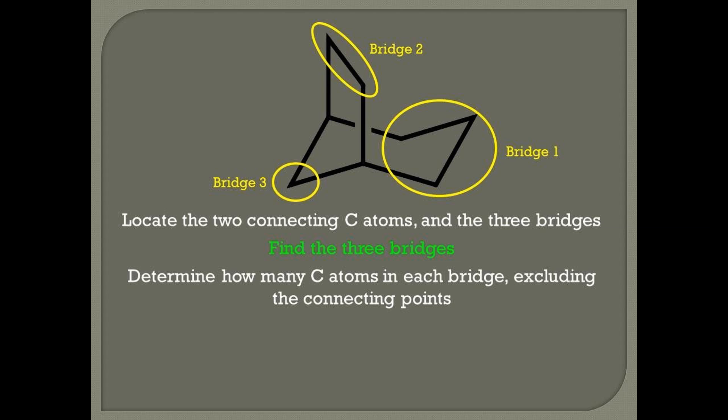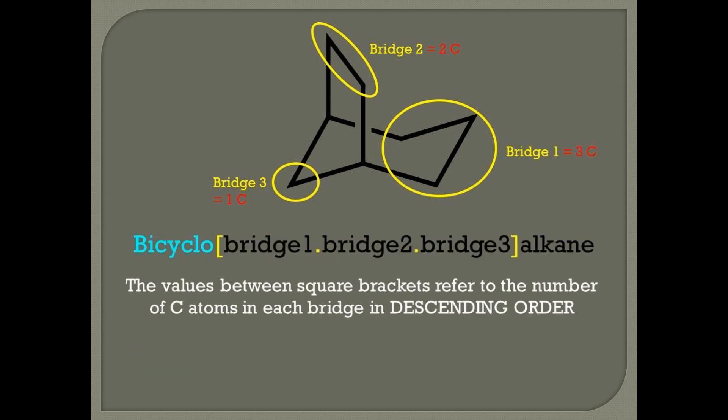Determine how many carbon atoms exist in each bridge, excluding the connection points. You can see that bridge 1 has three carbon atoms, bridge 2 has two carbon atoms and bridge 3 has one.